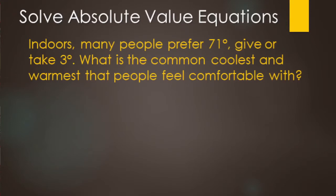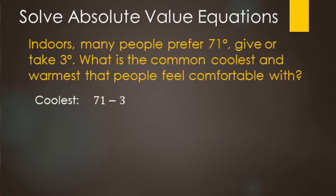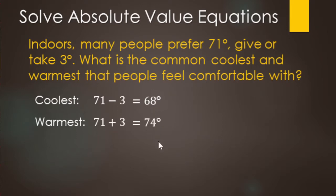So quick scenario here. Indoors, many people prefer 71 degrees Fahrenheit, give or take 3 degrees. So what is the coolest and warmest temperature that people feel comfortable with? This 'give or take' means it could be more or less by 3 degrees. For the coolest, we take 71 minus 3, which makes 68 degrees. For the warmest, 71 plus 3 makes 74 degrees.